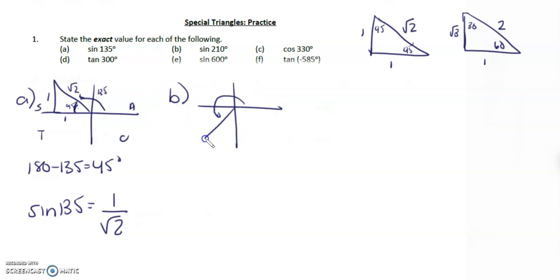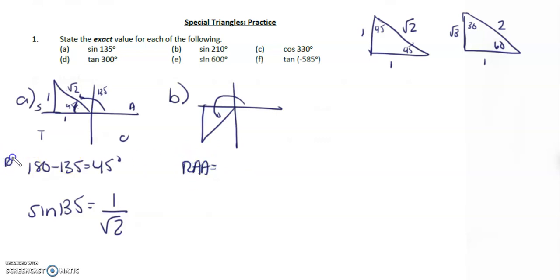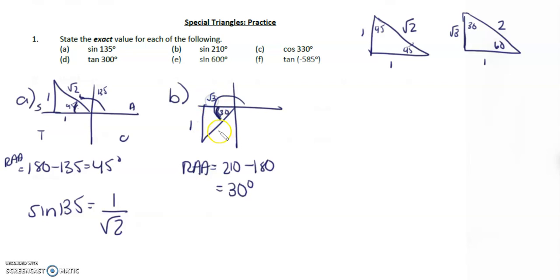Sine of 210 — 210 can be plotted down here. So we're going to find the related acute angle, which is 210 minus 180. So our related acute angle equals 30 degrees. Opposite 30 is 1, adjacent 30 is root 3, and the hypotenuse is 2. So the sine of 210 is 1 over 2. Applying the CAST rule, this one is actually going to be negative.